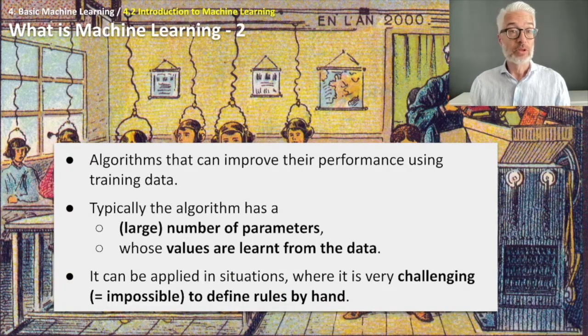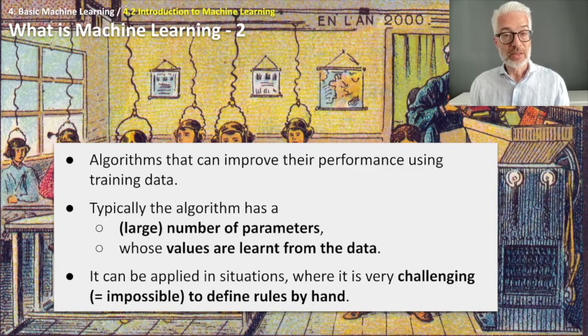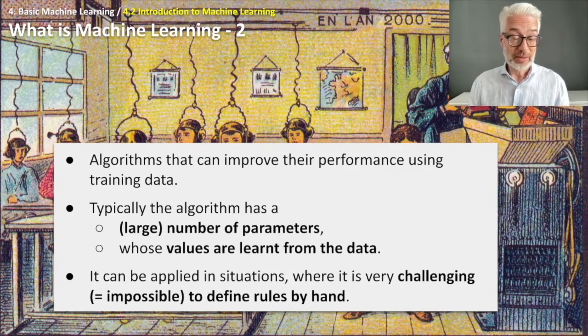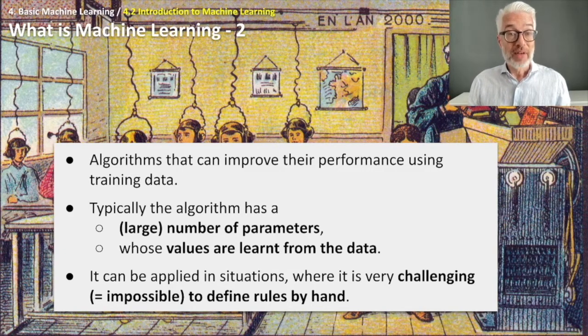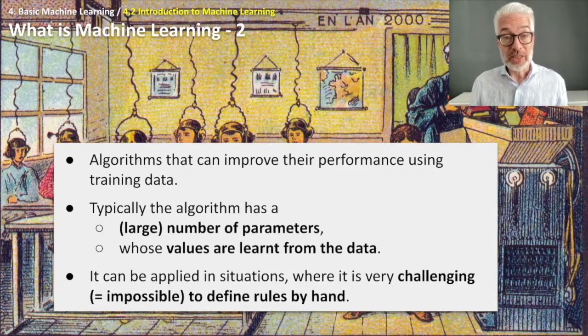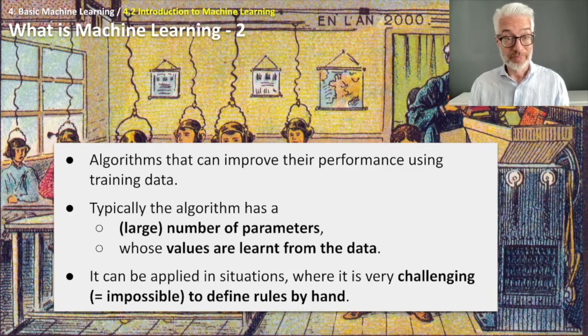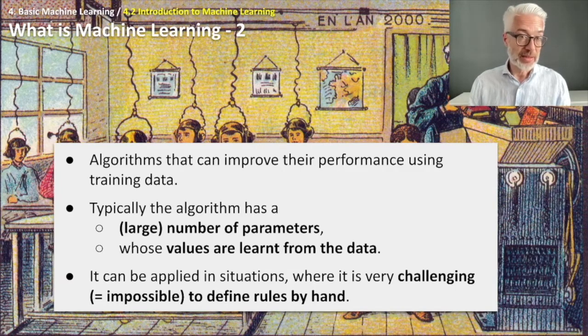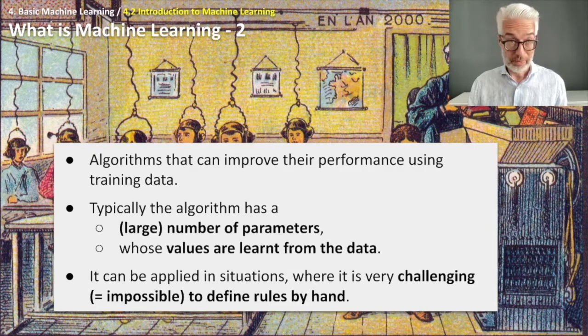More simply: algorithms can improve their performance using training data. This is the difference from traditional algorithms. Typically the algorithm has a large number of parameters that you have to optimize, and the values of these parameters have to be learned from the data. Then it can be applied in situations where it's very challenging or impossible to find rules to adapt these values by hand.